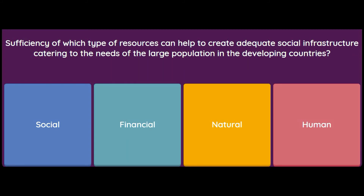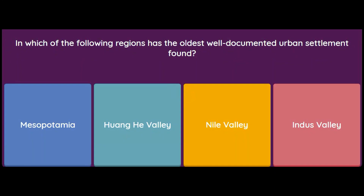Sufficiency of which type of resources can help create adequate social infrastructure catering to the needs of large populations in developing countries? Social, financial, natural, or human? The answer is natural resources — without sufficient natural resources, a country cannot support a large population, and therefore cannot build adequate social infrastructure.